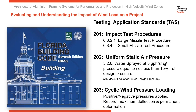TAS 201 talks about the test procedure for large missile impact and small missile impact. TAS 202 involves uniform static air pressure — once the system mock-up has been impacted by the missile test, you spray water on the exterior and draw negative pressure on the interior and hold it, performing a uniform static air test.